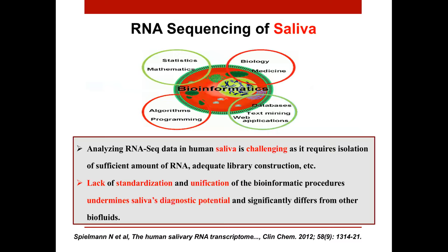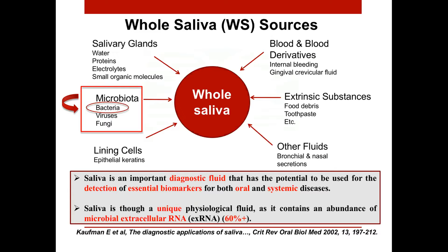RNA sequencing of saliva is challenging. It requires isolation of sufficient amounts of RNA from saliva, which is not an easy task, as well as adequate library construction. There is also a lack of standards or unification of bioinformatic procedures specifically designed for processing saliva data. This encouraged us to perform our study. Saliva is a truly unique biofluid, originating from the salivary glands, microbiota, lining cells, blood and blood derivatives, extrinsic substances, and other fluids.